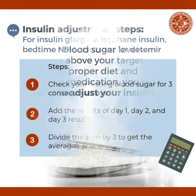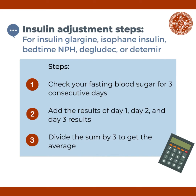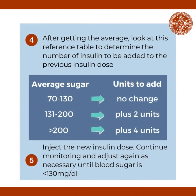These are the steps in adjusting your insulin if you are on glargine, isophane insulin, bedtime isophane insulin, degludec, or detemir. First, check your fasting blood sugar for three consecutive days. Second, add the results for days one, two, and three. Third, divide the sum by three to get the average. Fourth, after getting the average, look at the reference table to determine the amount of insulin to be added to your previous insulin dose.